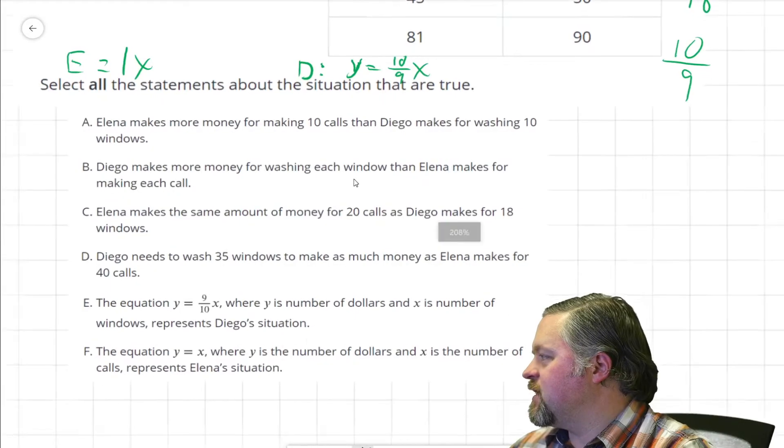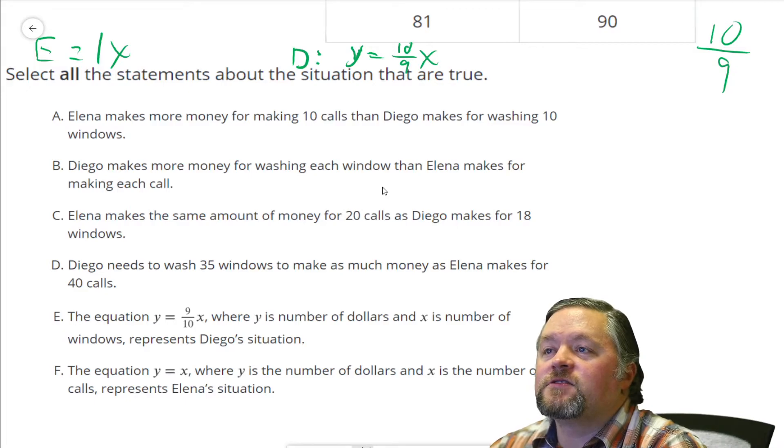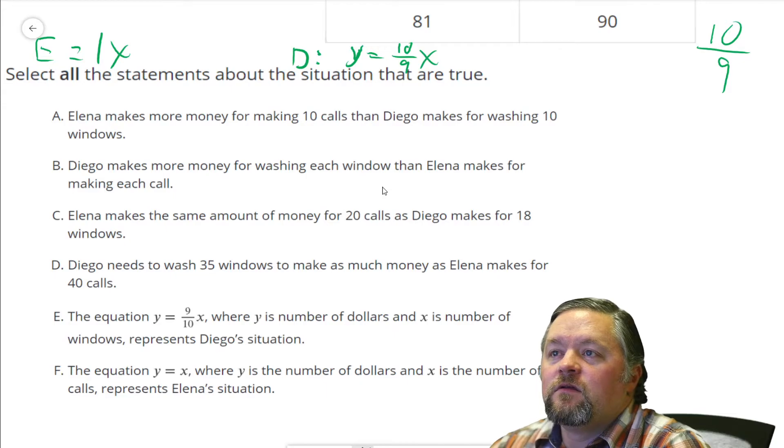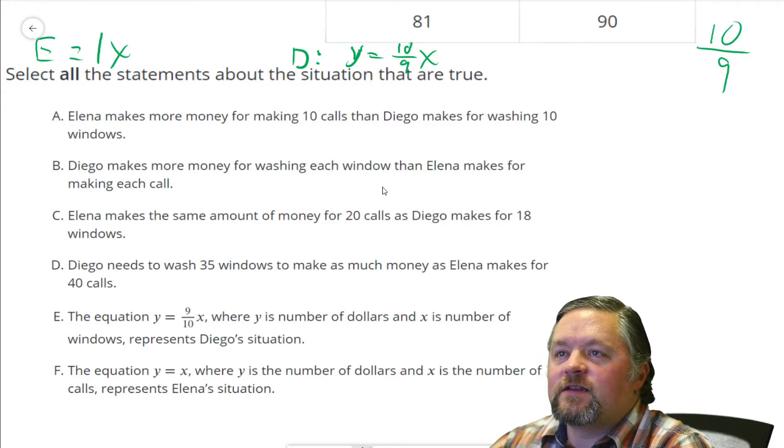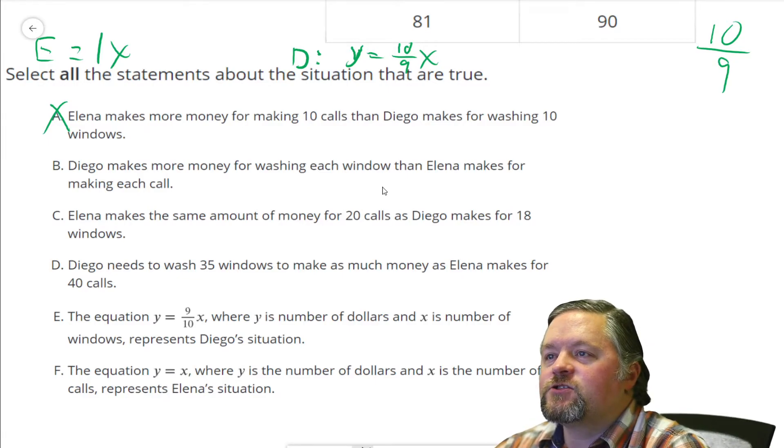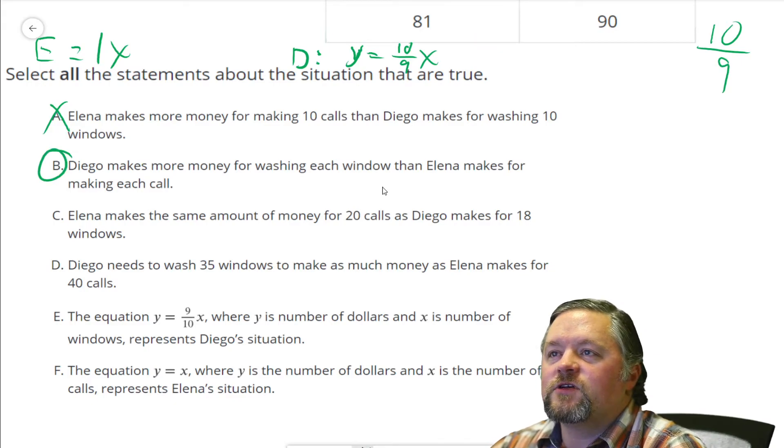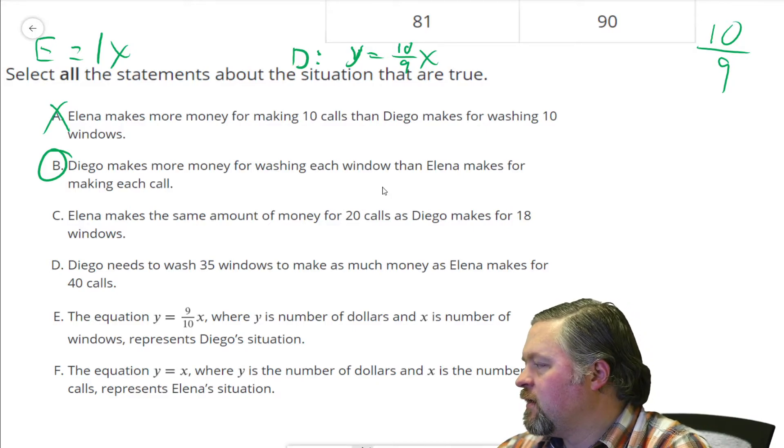Elena makes more money for making 10 calls than Diego makes for washing 10 windows. Well, Diego makes more per window and they're both doing 10. So that is not true because Diego makes more money than Elena. Diego makes more money for washing each window than Elena does for making each call. Yes, that's true because he makes 1 and a 9th dollar per window compared to her making $1 per call.